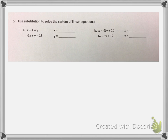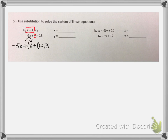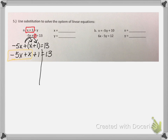Use substitution to solve the system of linear equations. The first equation is solved for y, so that expression is going to go in place of y in the second equation. Starting with the second equation: negative 5x plus, when I get to y, I substitute x plus 1 from the first equation in parentheses, equals 13. Distributing: positive 1 times x is plus x, and positive 1 times 1 is positive 1. So: negative 5x plus x plus 1 equals 13. I notice like terms: negative 5x plus 1x. If I have 5 negatives and 1 positive, I have 4 negatives left, so negative 4x plus 1 equals 13.